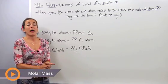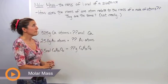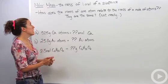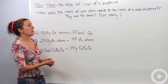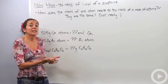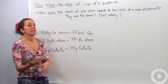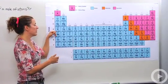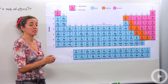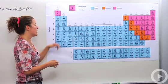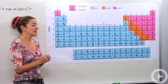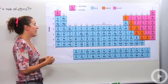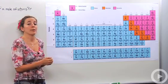We're going to talk about molar mass and what that means. The molar mass is the mass of one mole of a particular substance. So how does the mass of one atom relate to the mass of a mole of atoms? Let's look at the periodic table. The numbers underneath each element represent the atomic mass of that atom. For example, the average mass of a potassium atom is 39.0983 atomic mass units.